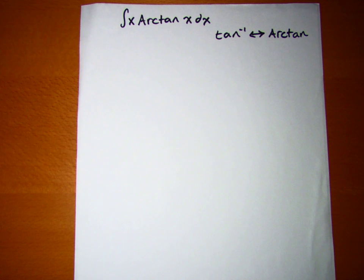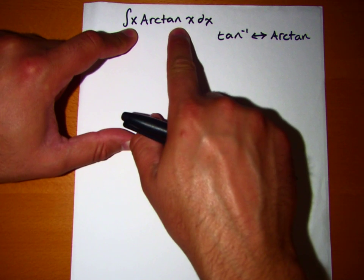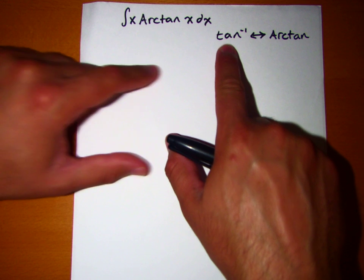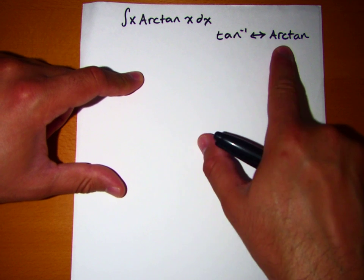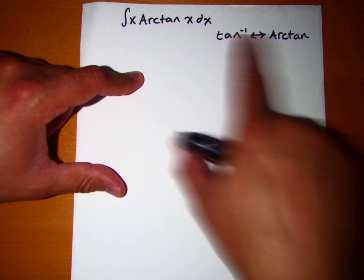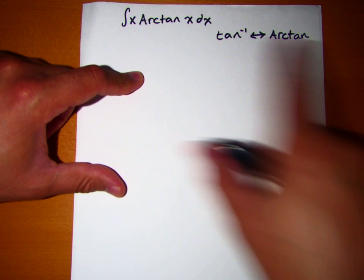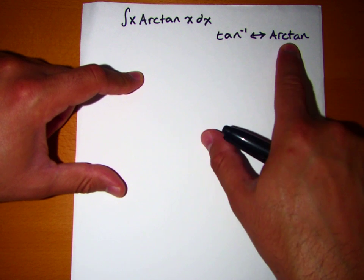Okay, the question is how to integrate x arctangent of x. Now for personal preferences, I don't like to use this notation here. I prefer, in this case, arctangent over the inverse tangent. It means the same thing, it's just a different notation.